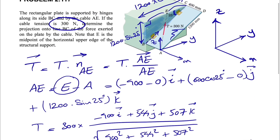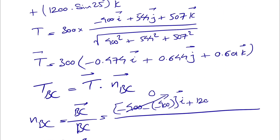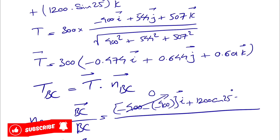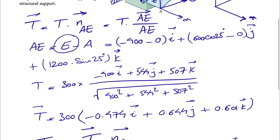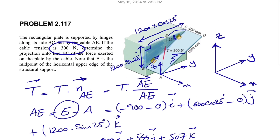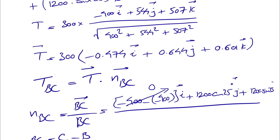For the y-component: the y-coordinate of B is zero, but the y-coordinate of C is 1200 × cos(25°). So the j-component of BC is 1200 × cos(25°) and there is no y for B. Moving on to the k-component: the z-coordinate of C is 1200 × sin(25°), so the k-component of BC is 1200 × sin(25°), and again there is no k-component for B.